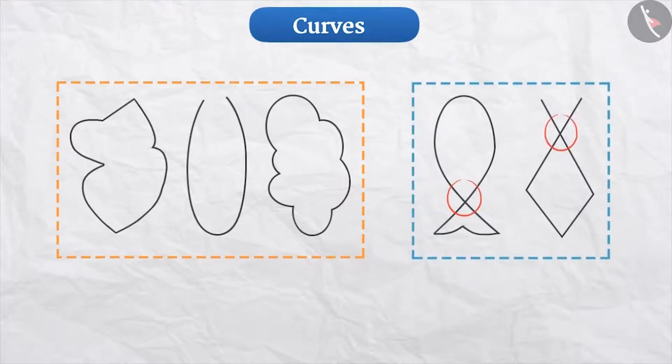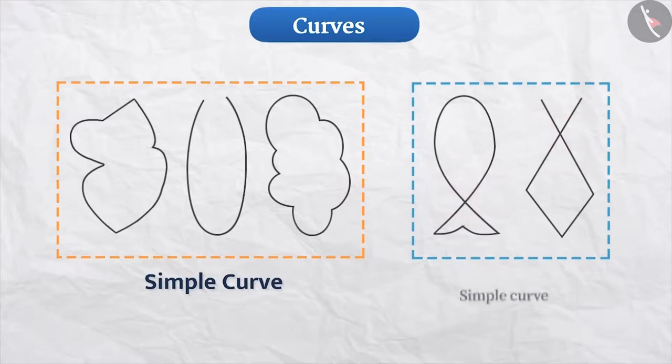When a curve does not cut itself, then we call it a simple curve. If a curve cuts over itself, then it is a non-simple curve.